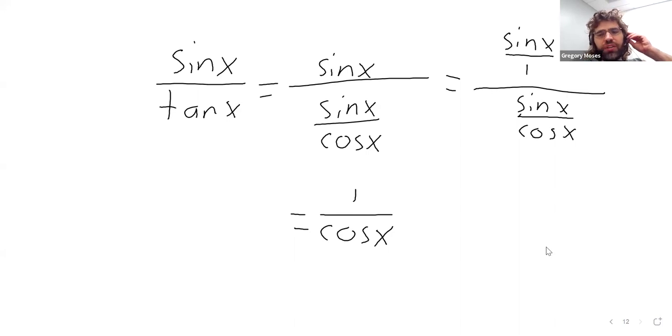And you could leave that be. I mean, I said that if we have a choice, it's nice to have sines and cosines. So maybe I shouldn't make a hypocrite of myself. Or we can say, well, one divided by the cosine is the secant.